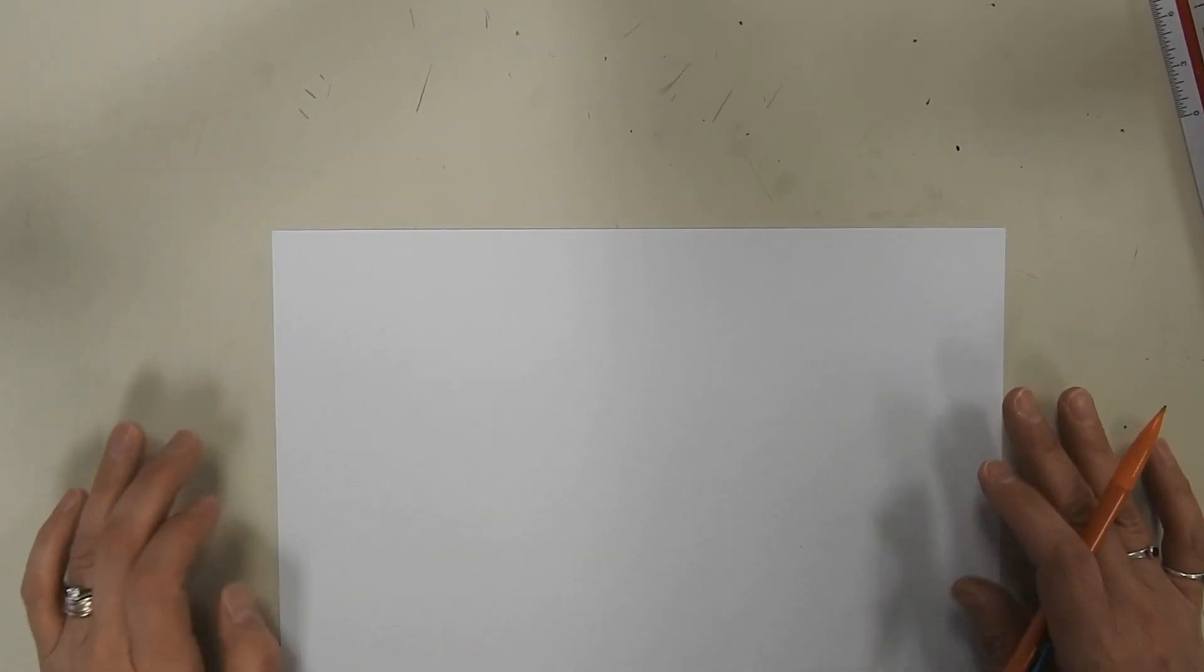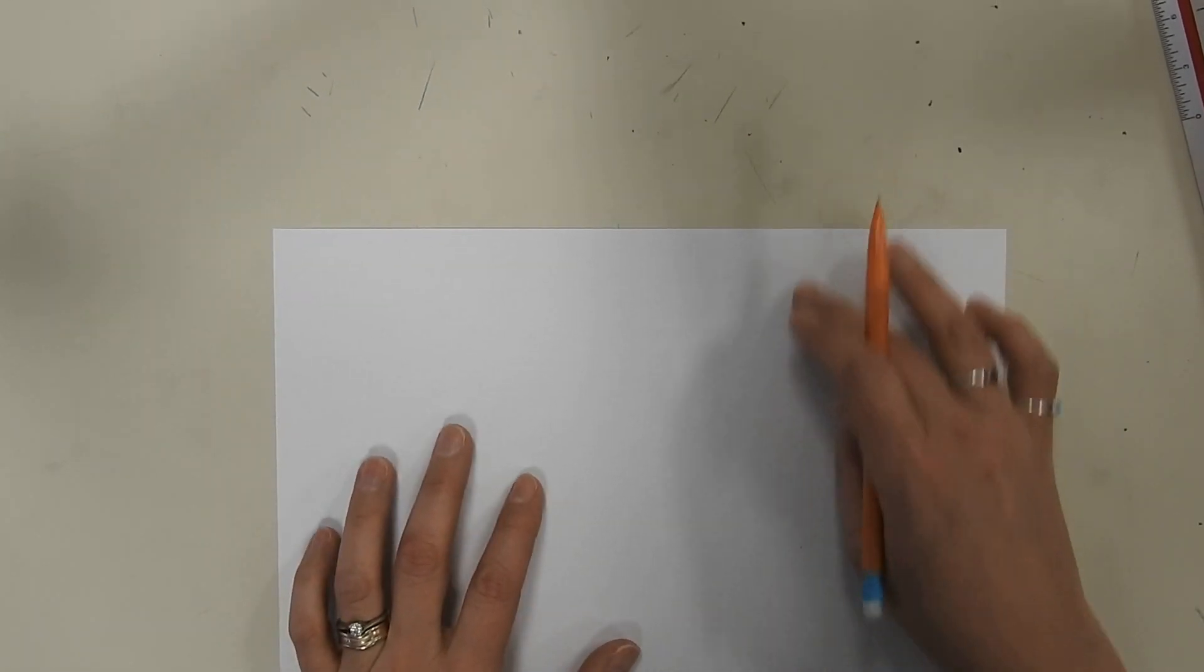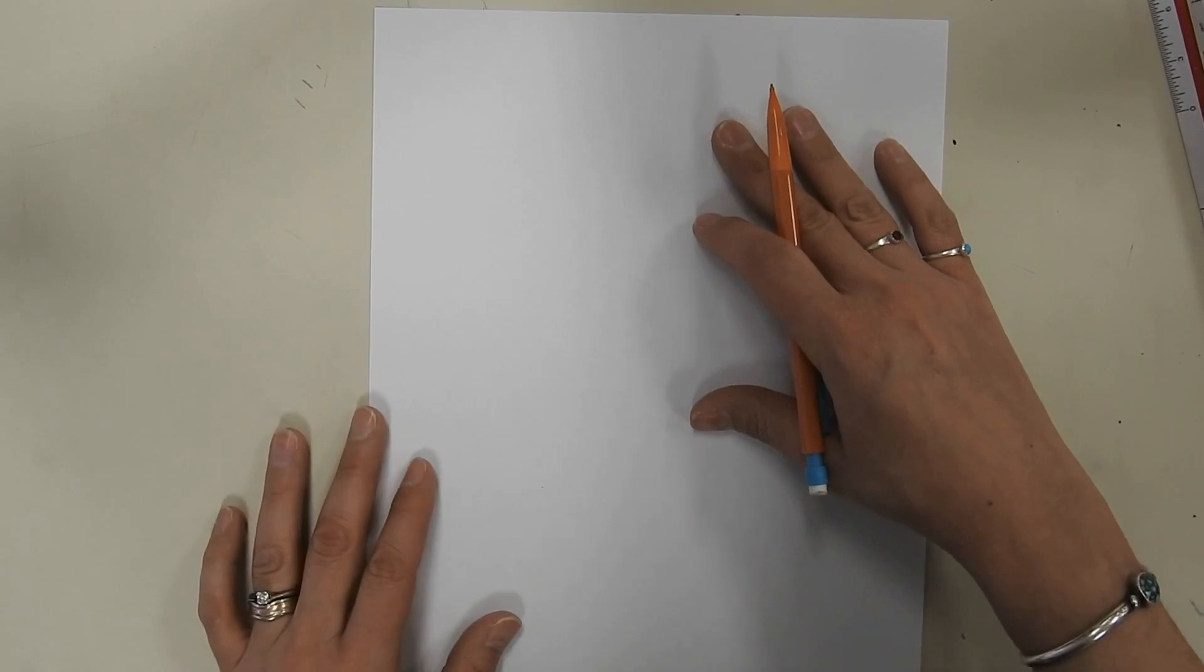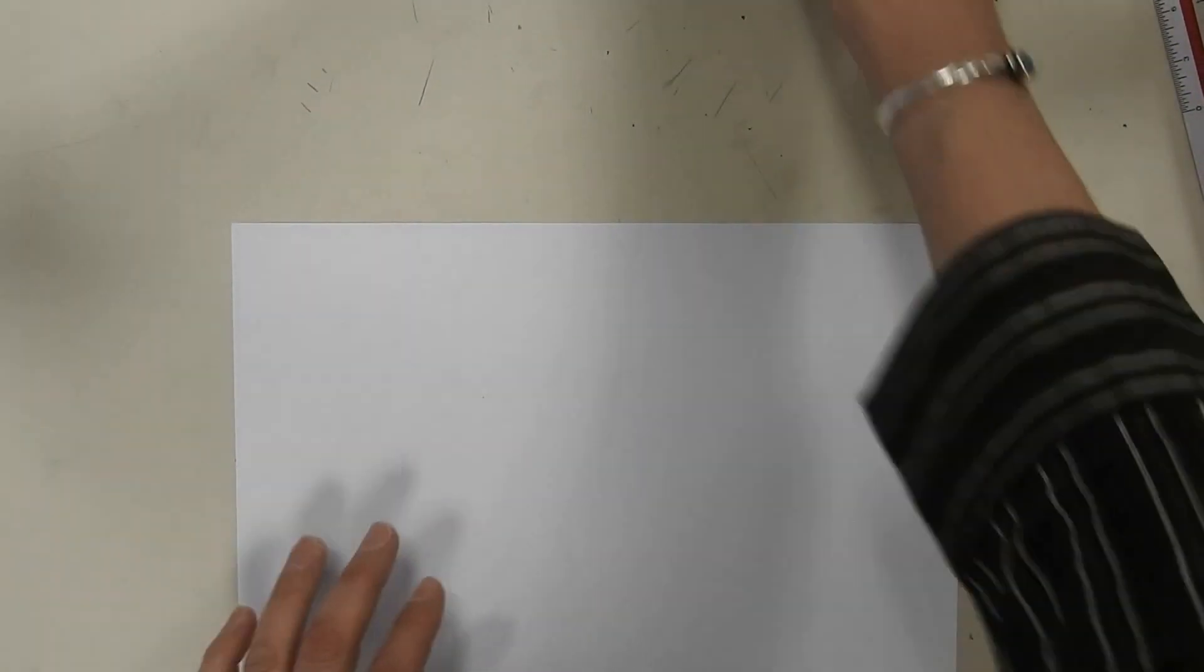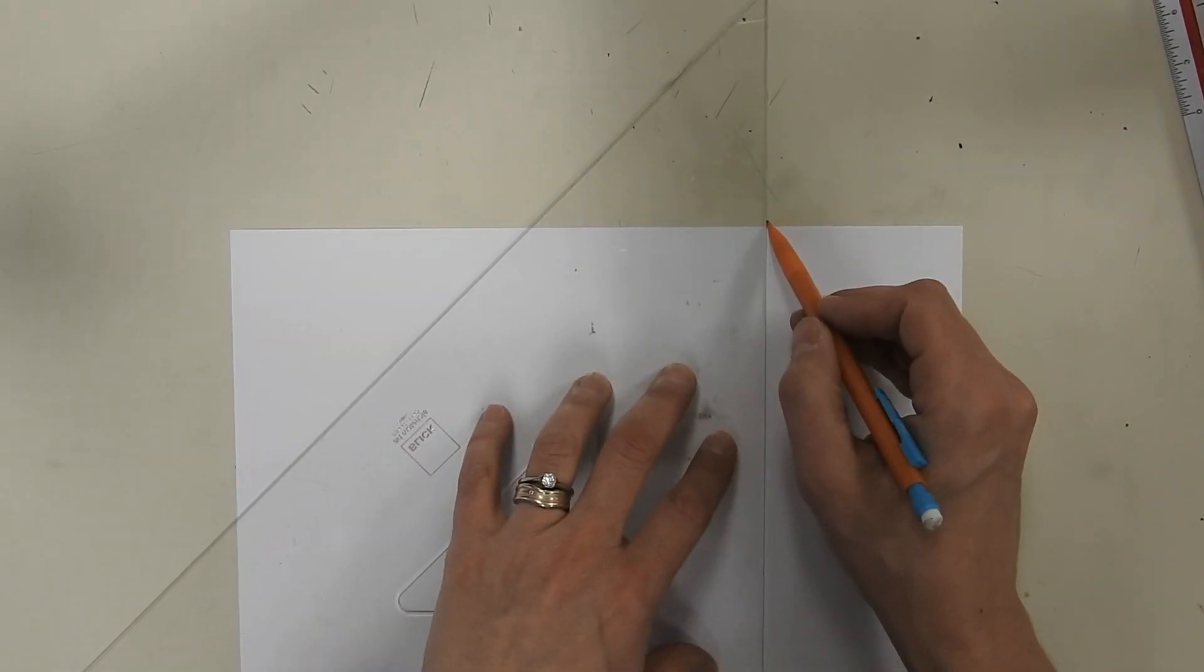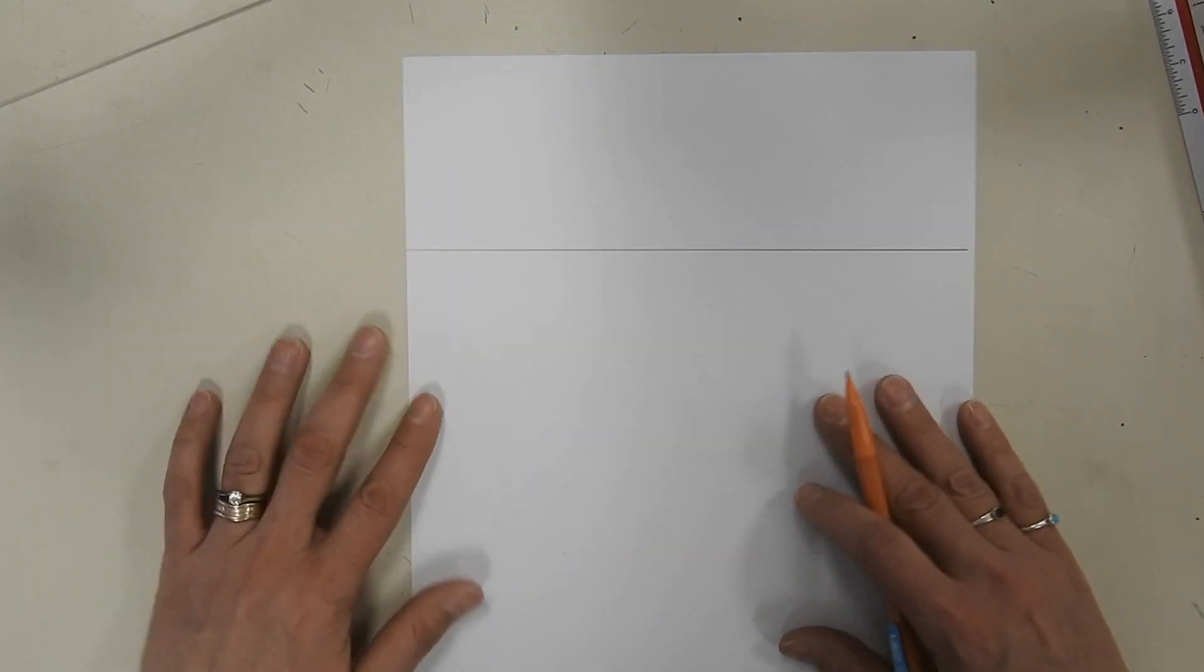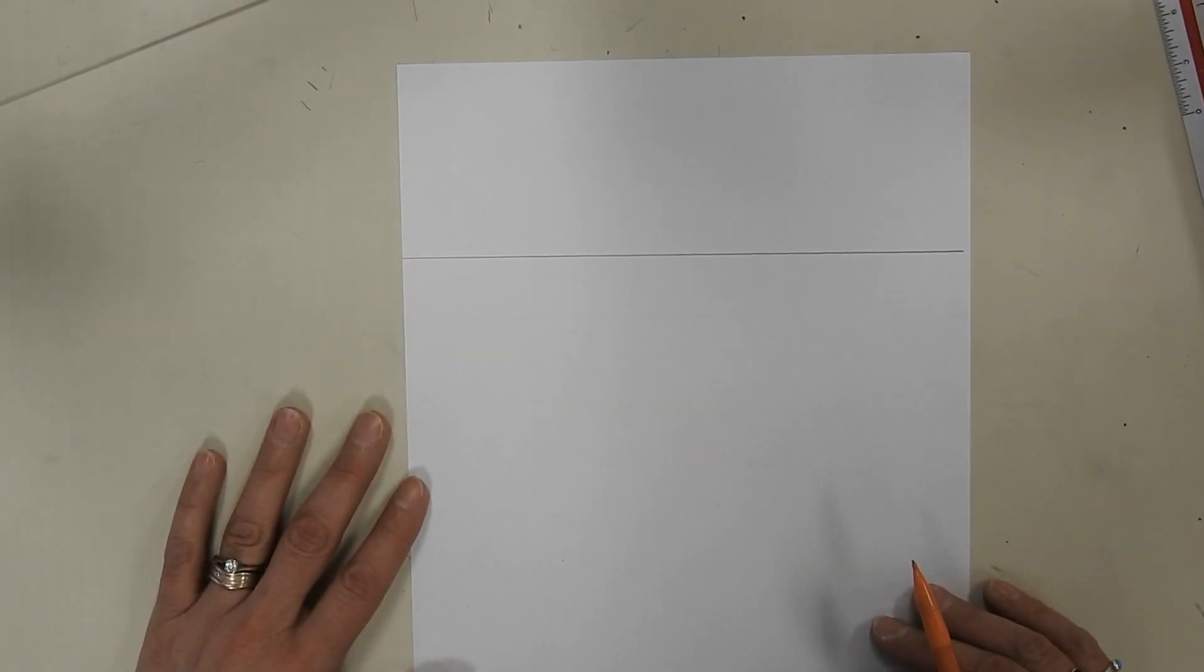So when you practice three-point perspective, I recommend that your horizon line goes this way on your page rather than this way. So I'm going to turn the page this way and use my triangle, give myself a horizon line, and then I'm going to turn my page back so it's the long way.